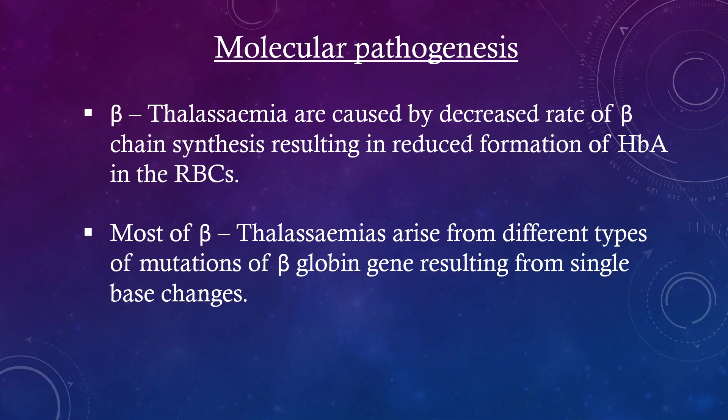Molecular pathogenesis. Beta-thalassemias are caused by a decreased rate of beta chain synthesis resulting in reduced formation of HbA in the RBCs. Most beta-thalassemias arise from different types of mutations of the beta-globin gene resulting from single base changes.